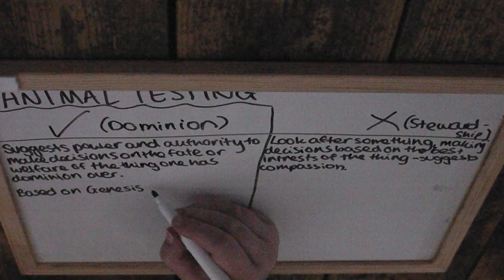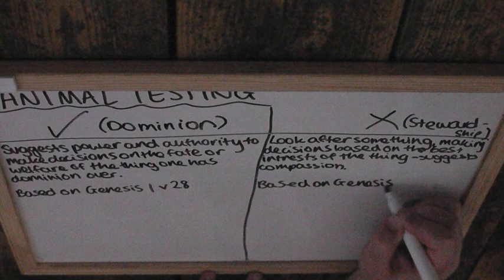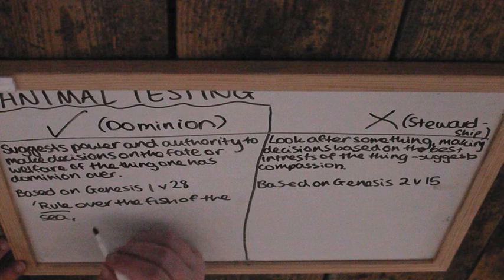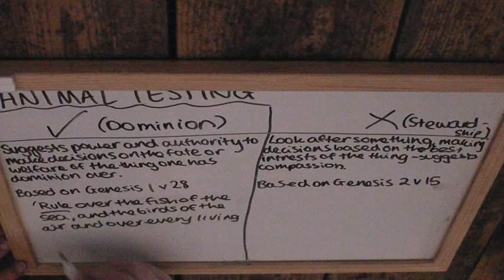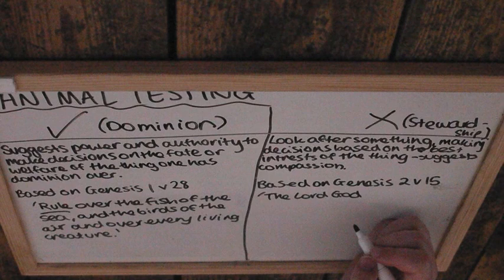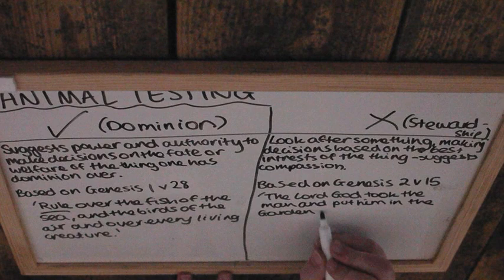Dominion is based on Genesis 1.28, and stewardship is based on Genesis 2.15. Genesis 1.28 says: 'Rule over the fish of the sea and the birds of the air and over every living creature that crawls on the ground.' Genesis 2.15 says: 'The Lord God took the man and put him in the garden of Eden to work it and take care of it.'